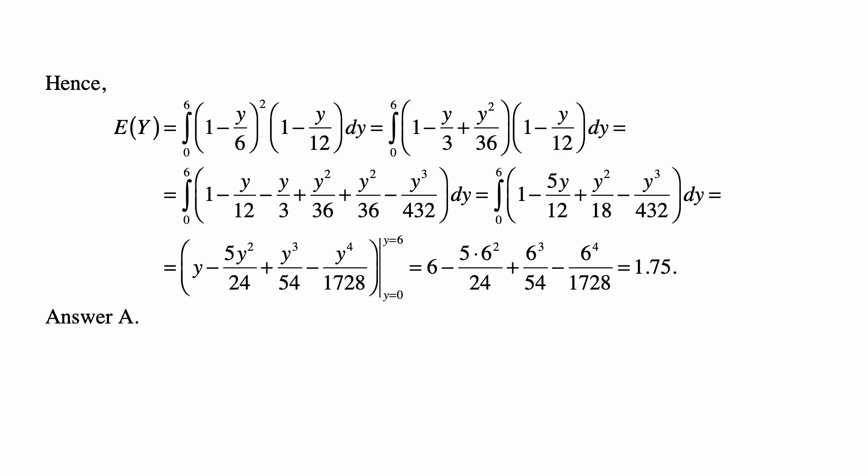So that's the integral from 0 to 6 of (1 minus y over 6) squared times (1 minus y over 12) dy. And that's the integral from 0 to 6 of (1 minus y over 3 plus y squared over 36) times (1 minus y over 12) dy. We multiply it out.